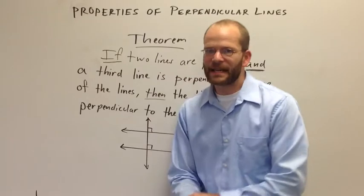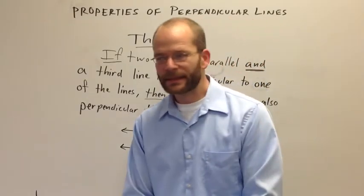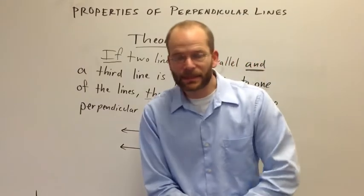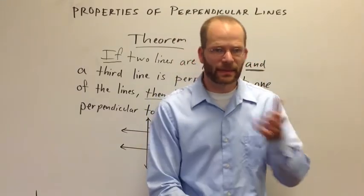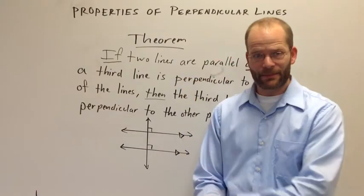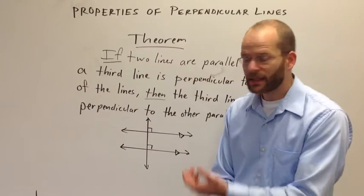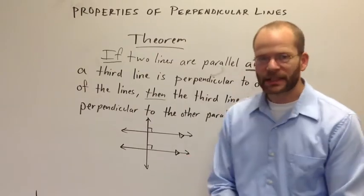You'll notice that this theorem doesn't have a name. In our textbook I believe it's called Theorem 3-1. And that numbering system is completely arbitrary. It could be called something completely different in another book. I'm not going to give it a name. If you want to name it that's fine. But for our purposes just remember that it is a theorem. It's a shortcut. It works every time.